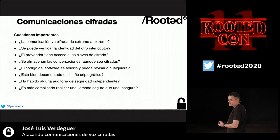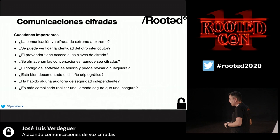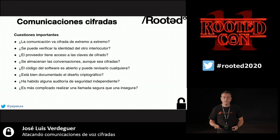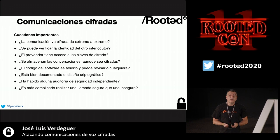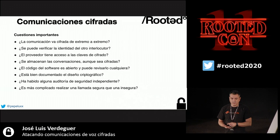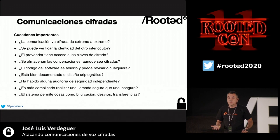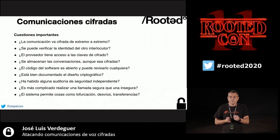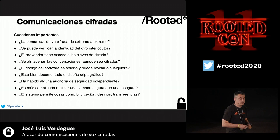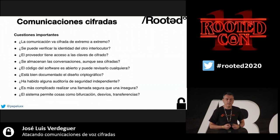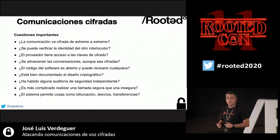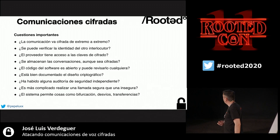Usability is critical. Encrypted calls should be as easy to make as non-encrypted calls, because users will always take the easiest route. An encrypted system should also offer the same features as a non-encrypted one — including forking (registering multiple devices), call transfer, and call diversion — all while maintaining encryption.